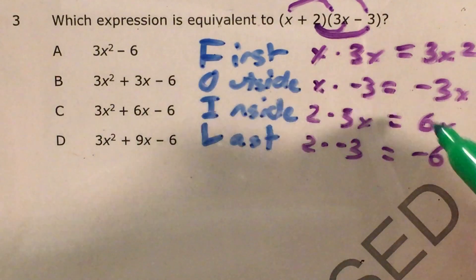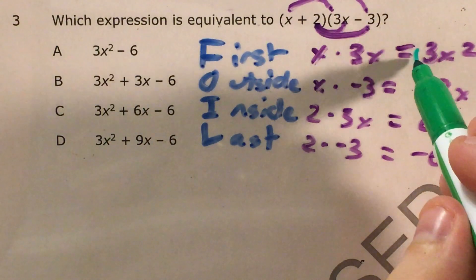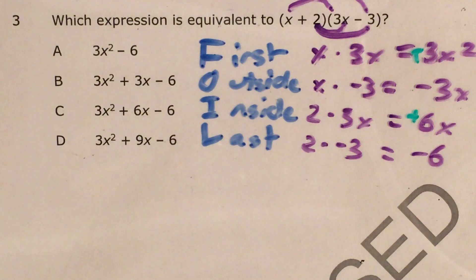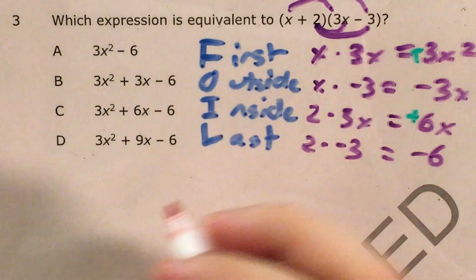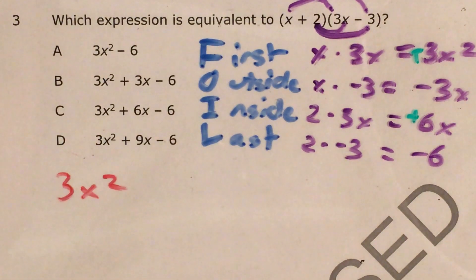So now, all I have to do is combine my like terms. So we think of this as a positive 3x squared, positive 6x. And as I combine my like terms, I'm just going to say that 3x squared has nothing to go with it, so 3x squared just stays the same.